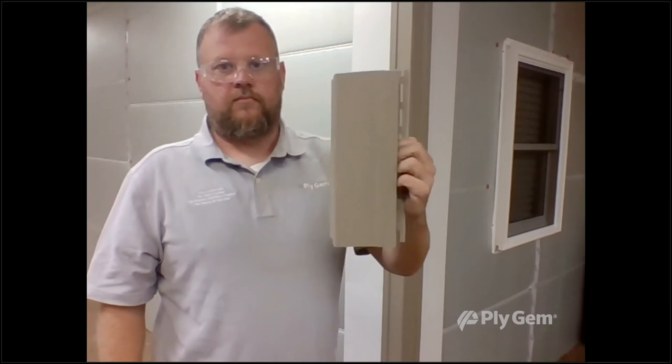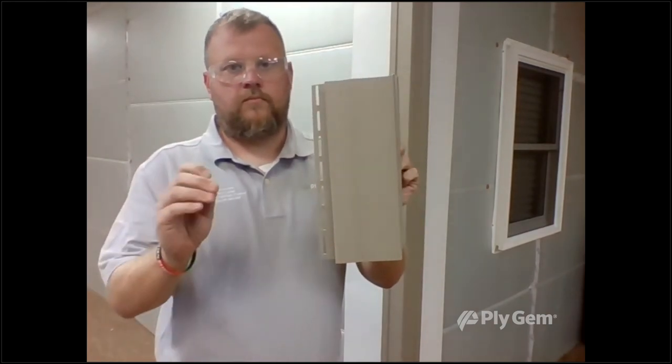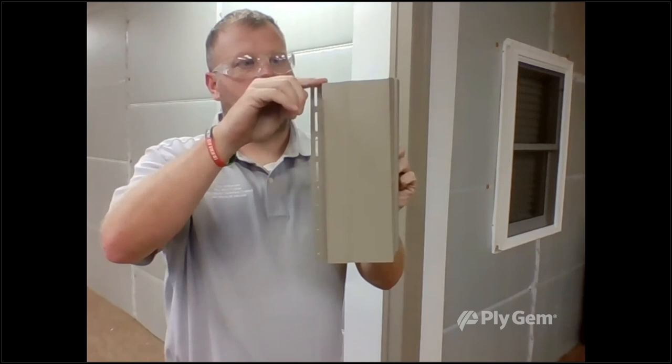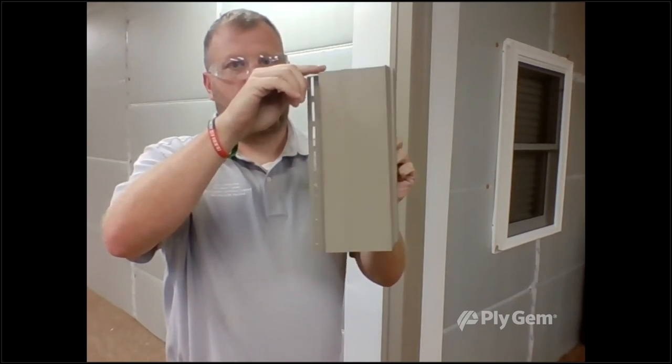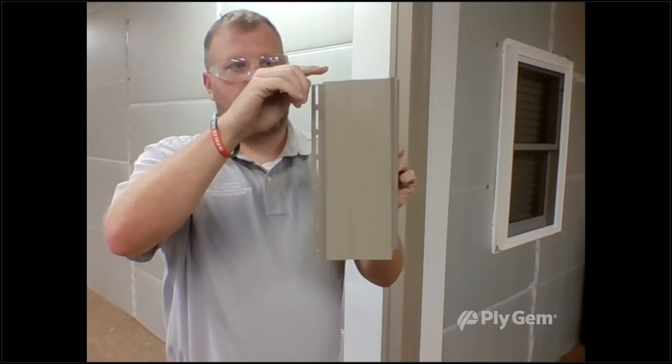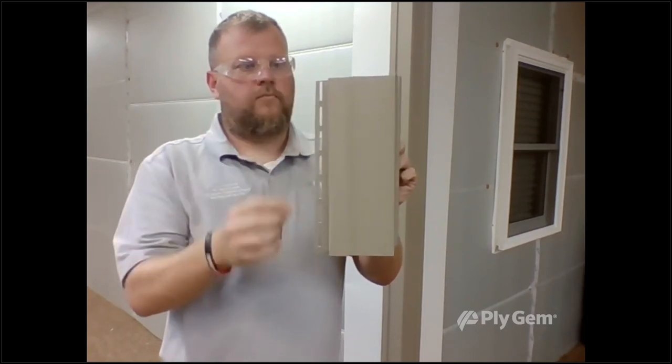When you put this corner post up, make sure you leave a quarter-inch gap at the top between that and the soffit receiver. That way the panel can expand and contract up and down. Put the nail in the top of the top slot. We don't want to nail any nails tight.